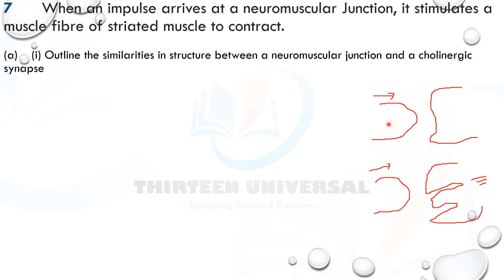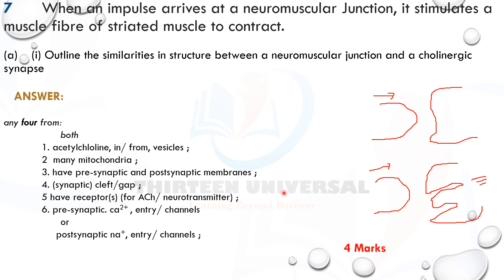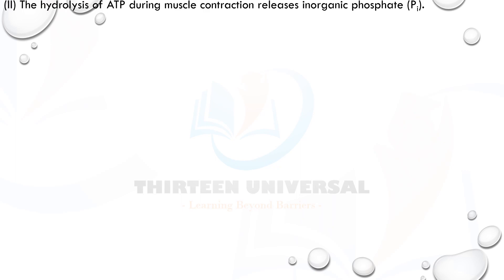Each also has a synaptic cleft — the gap between the two structures. The synaptic cleft contains acetylcholinesterase, the enzyme that breaks down acetylcholine. Both have sodium ion ligand-gated channels on the post-synaptic membrane. Sodium ions diffuse in and cause depolarization. In summary: both have acetylcholine released from vesicles, many mitochondria, pre- and post-synaptic membranes, a synaptic cleft, and receptors for ACh on their post-synaptic membranes.